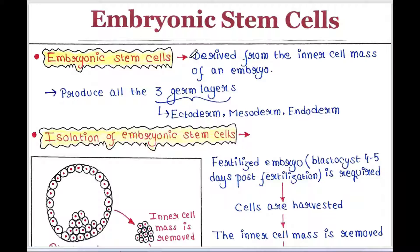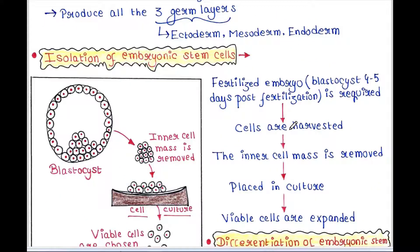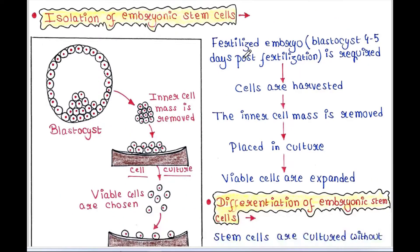Embryonic stem cells are generally derived from the inner cell mass of an embryo. The embryo initially contains two cell layers: one is the trophoblast and the other is the inner cell mass. From the inner cell mass we can collect embryonic stem cells, and they can produce all three germ layers — ectoderm, mesoderm, and endoderm.